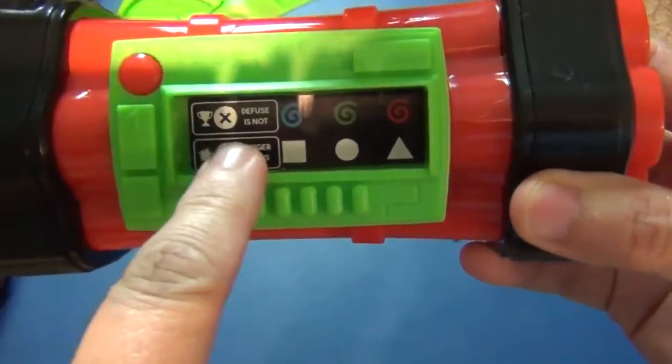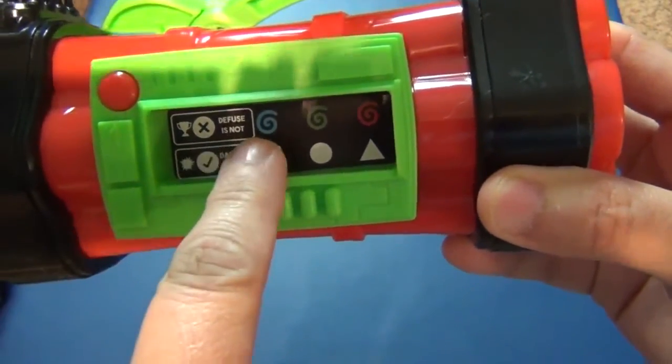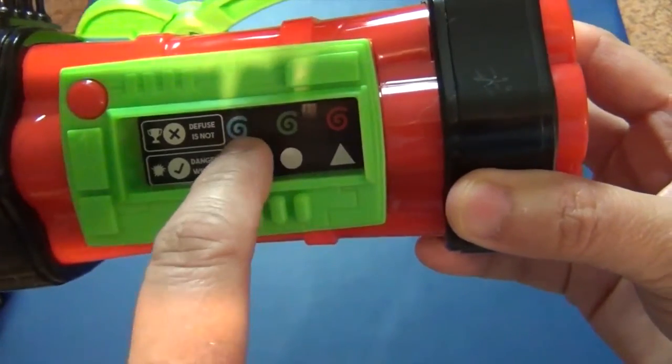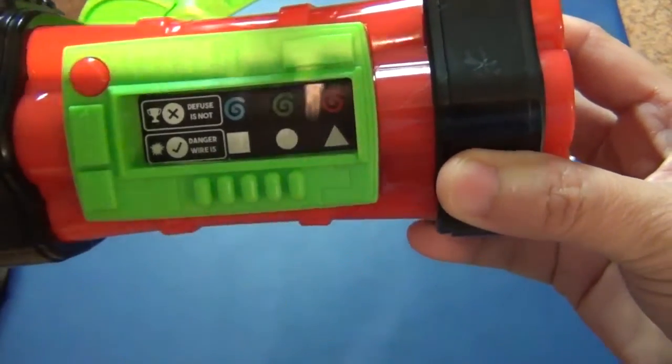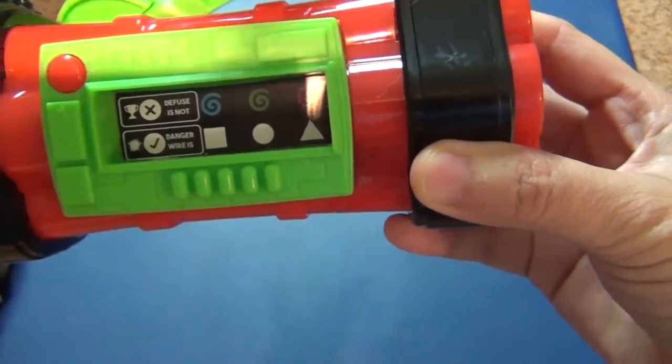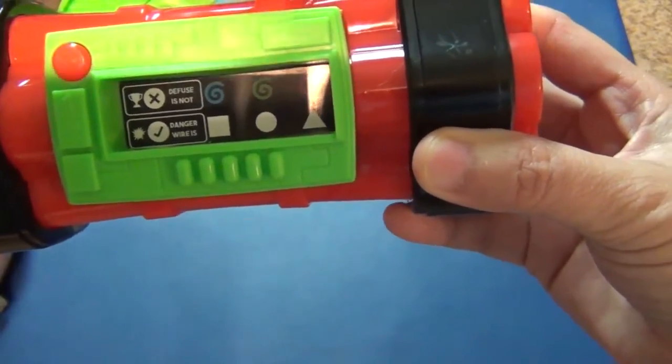When you turn it on and you hit the button, if the X row is all lit up then that's the regular classic mode. If you hold it down to where the second row all lights up, that's going to be the timed version. You can see it says diffuse is not blue, so if it lights up blue then you're going to want to cut the others. You have to follow the instructions; they're only on there for a few seconds, I think like three seconds.